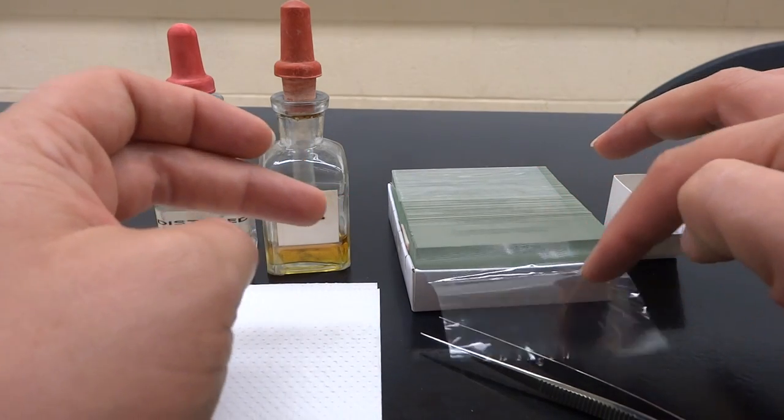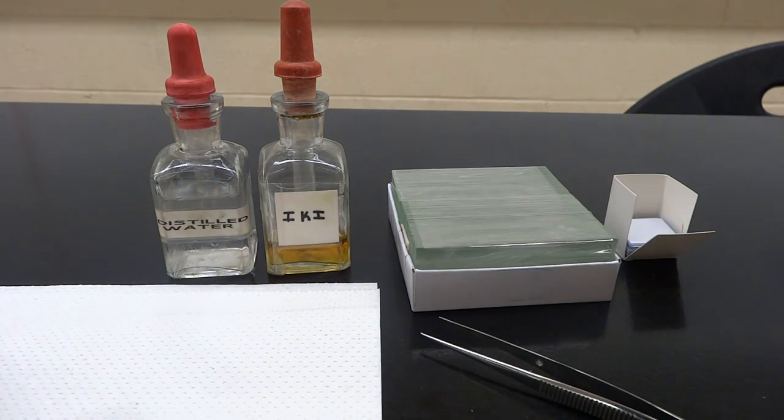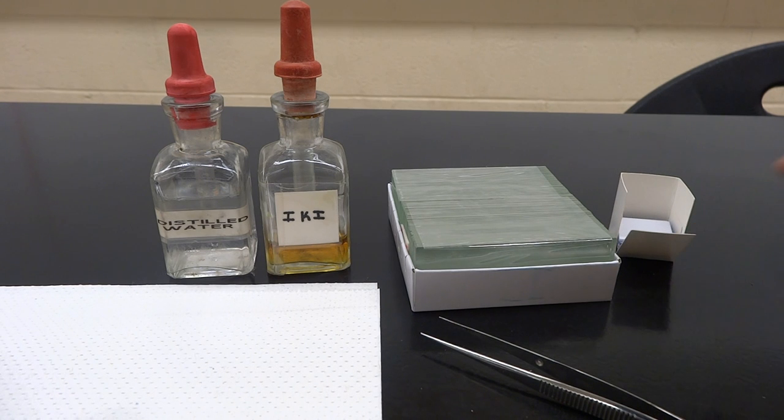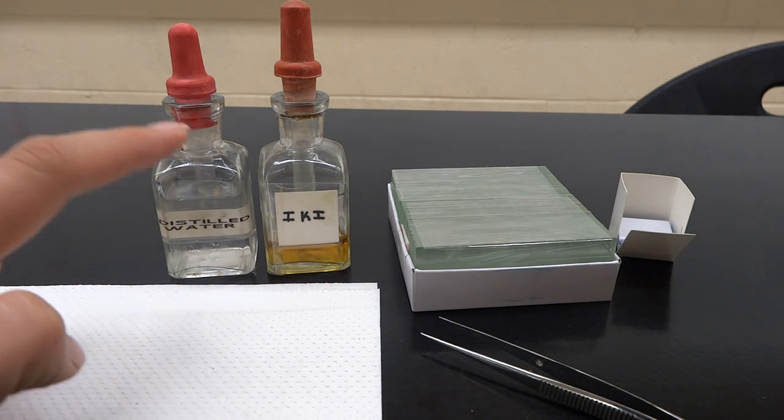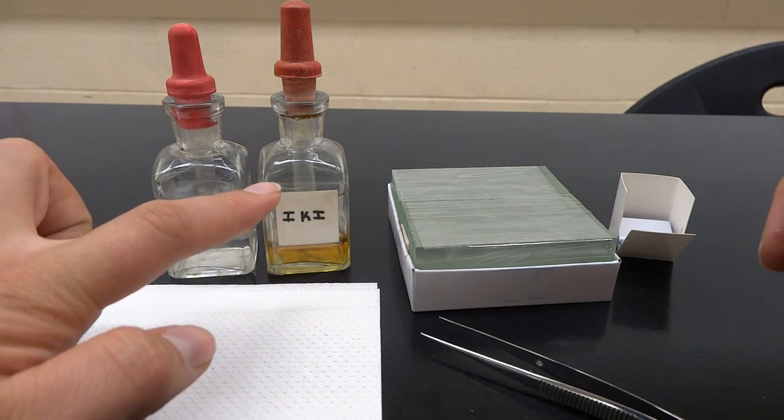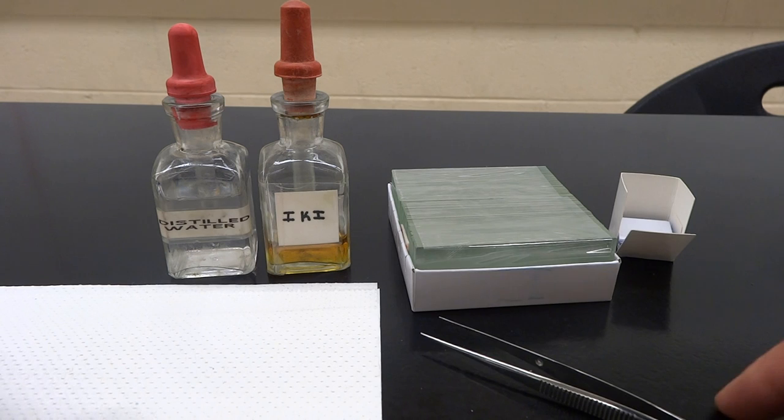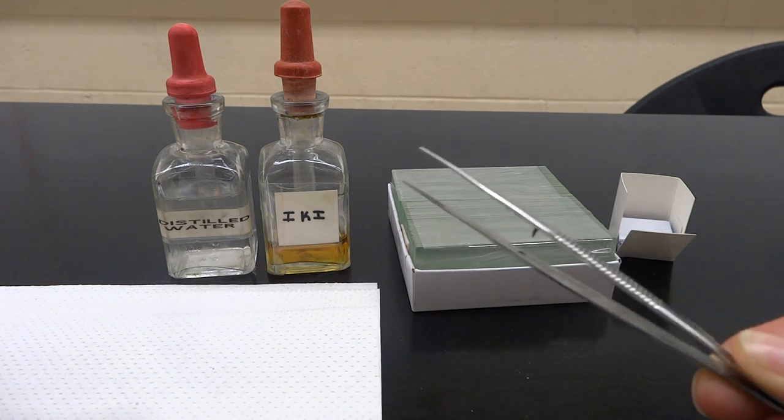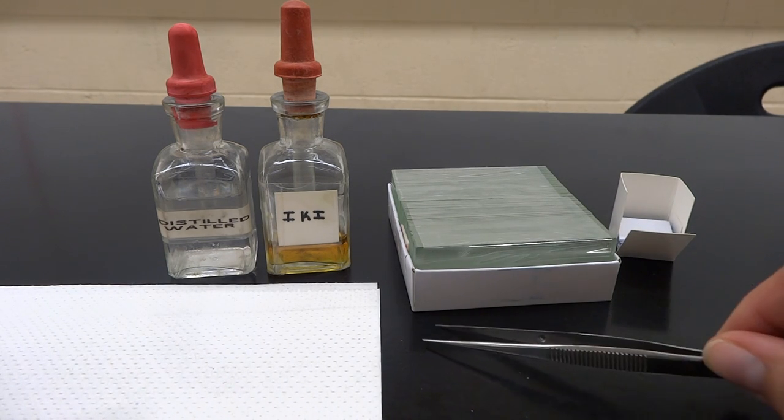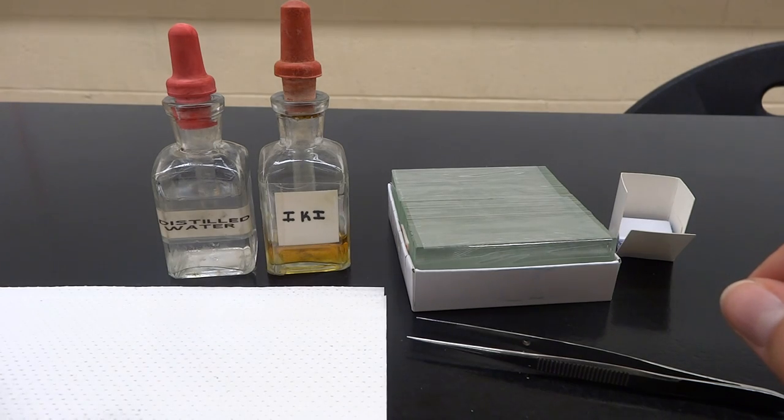So what you'll need to prepare to make a wet mount slide is first clean slides, cover slips to protect the specimen, distilled water, basically purified water, and a stain of some kind. In this case I'm going to use potato, so I will use iodine for the stain. You may also find forceps or what you would probably call tweezers to help out with that as well as paper towel.